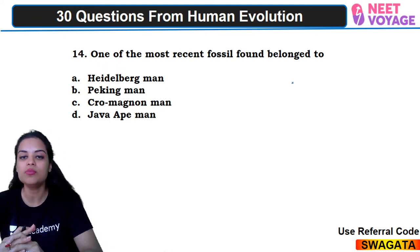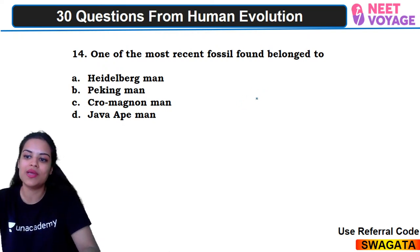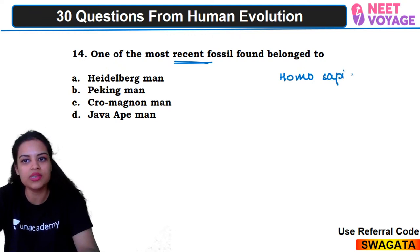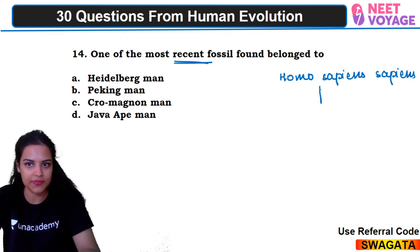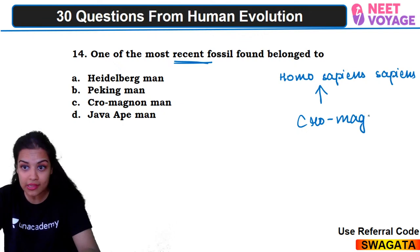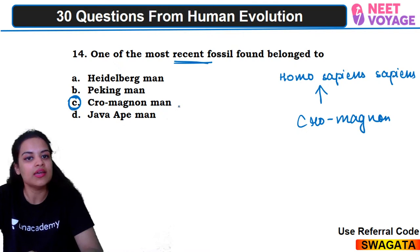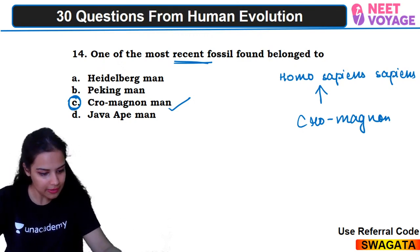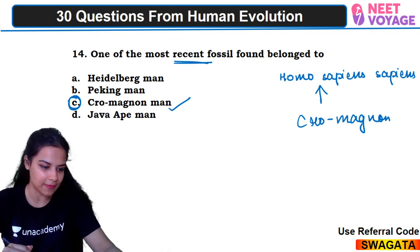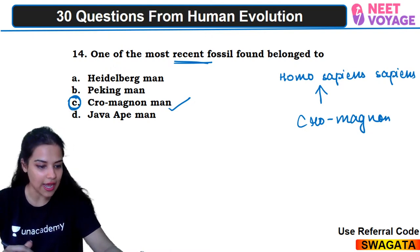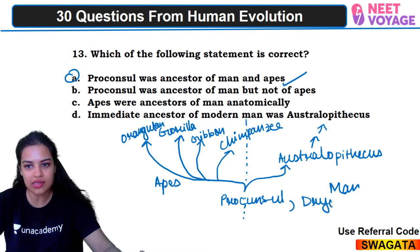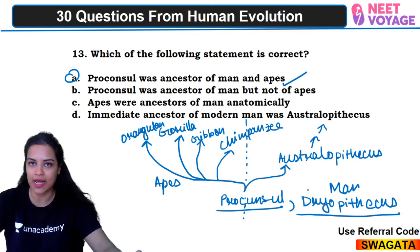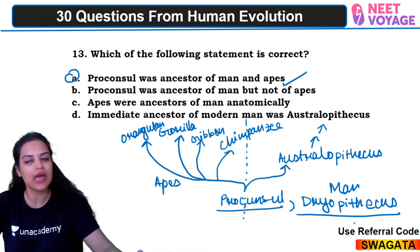Fourteenth question: one of the most recent fossils found belongs to whom? The most recent fossil before modern man would be Cro-Magnon man — Homo sapiens fossilis. Modern man is Homo sapiens sapiens and we haven't gone extinct yet, so our fossil won't be found. The right answer is C — Cro-Magnon man. Note that Dryopithecus and Proconsul are the same — both are common ancestors for man and apes.